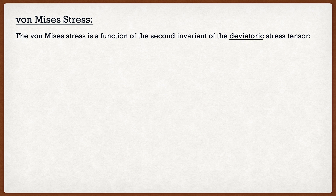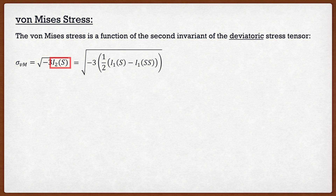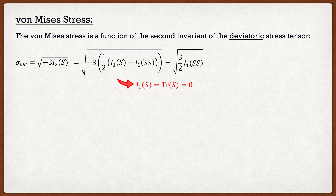The von Mises stress is actually a function of the second invariant of the deviatoric stress tensor — and this is actually a time where we use that second invariant. Sigma von Mises equals the square root of negative 3 multiplied by the second invariant of the deviatoric stress tensor S. The second invariant is one half of the first invariant of S squared minus the first invariant of SS. Since the first invariant of S — the trace of S — equals zero, this simplifies to: the von Mises stress equals the square root of three-halves multiplied by the first invariant of SS.